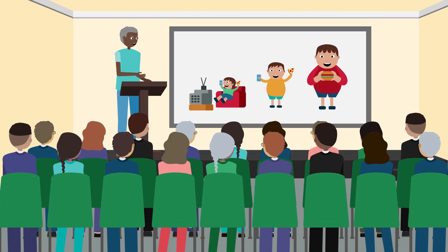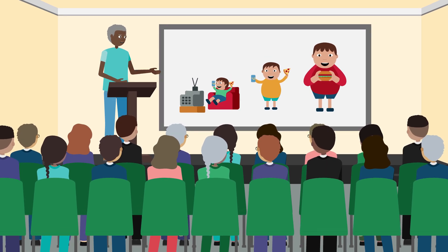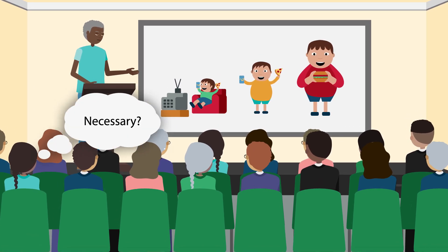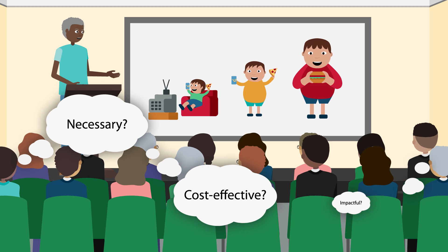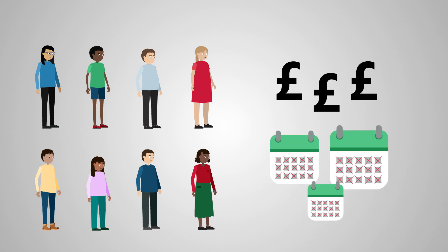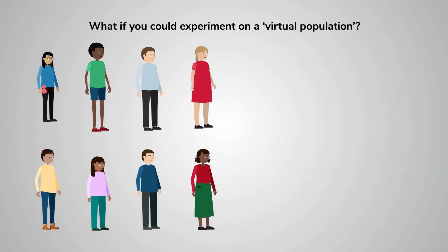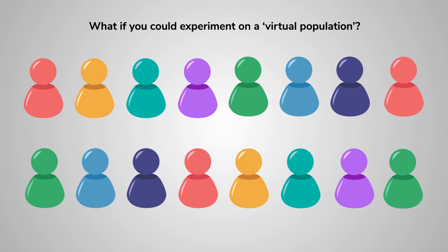How does the head of an NGO tackling childhood obesity convince decision-makers that their programme is necessary, cost-effective and impactful? Testing the programme on thousands of volunteers would be costly and time-consuming. What if you could experiment on a virtual population with all the characteristics of the real-world population that the programme intends to benefit?